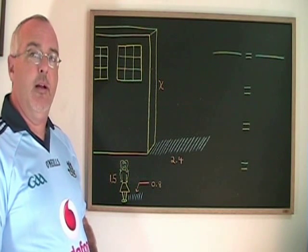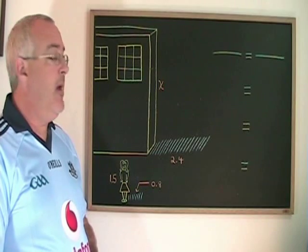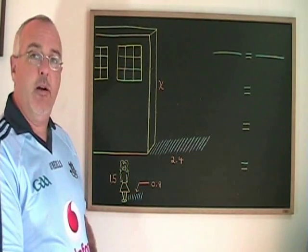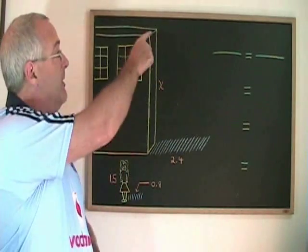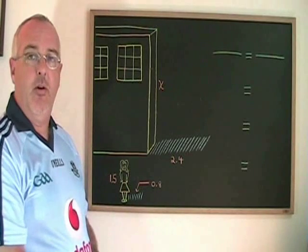Although this doesn't look like a problem that involves two triangles, it really is. We could draw a line that would connect the top of Maya's head to the end of her shadow, and we could draw a line that would connect the top of the school to the end of the school's shadow. We would have two similar triangles.